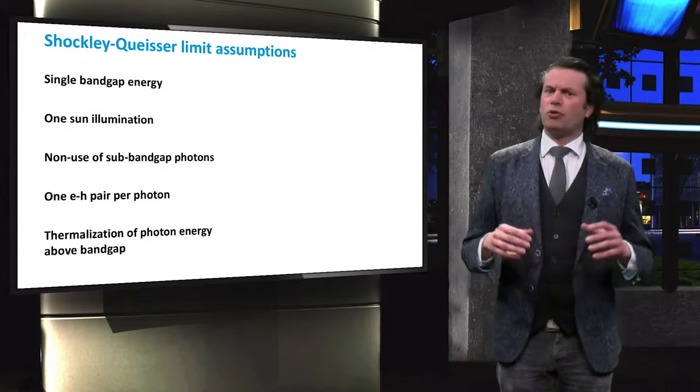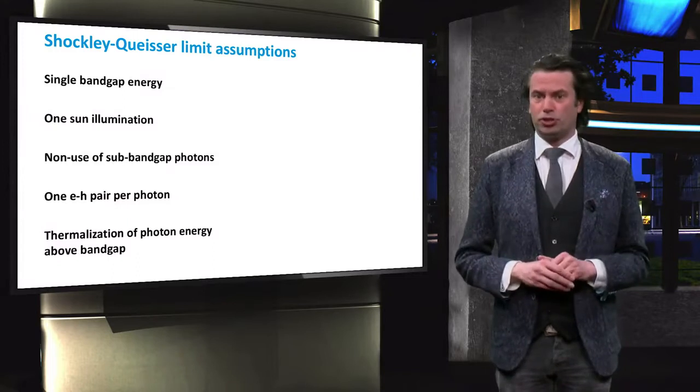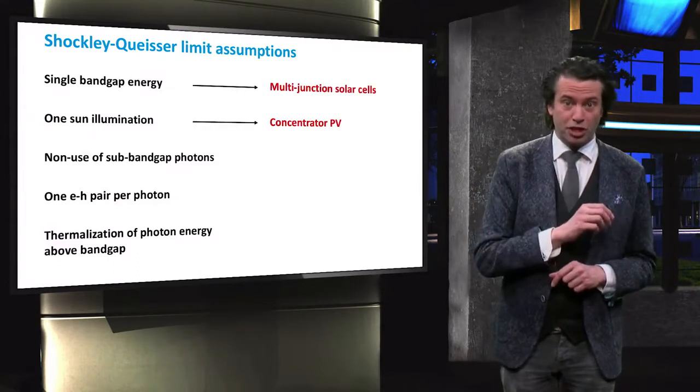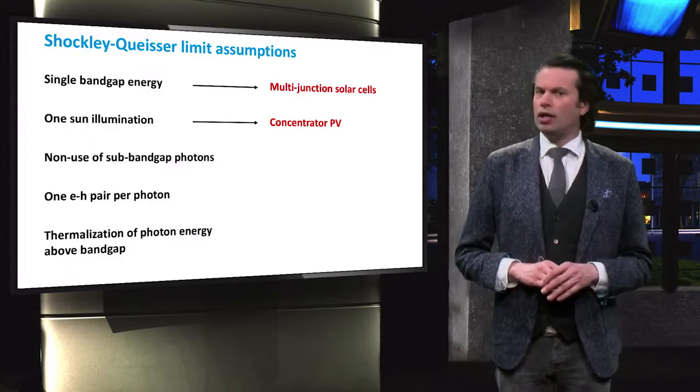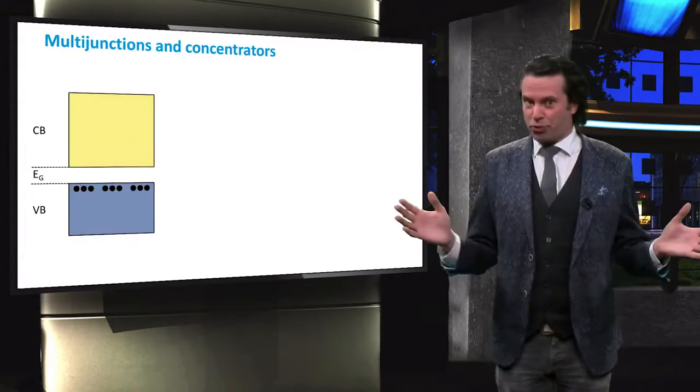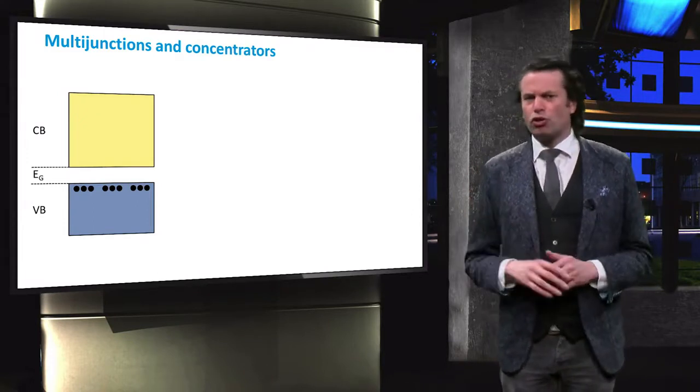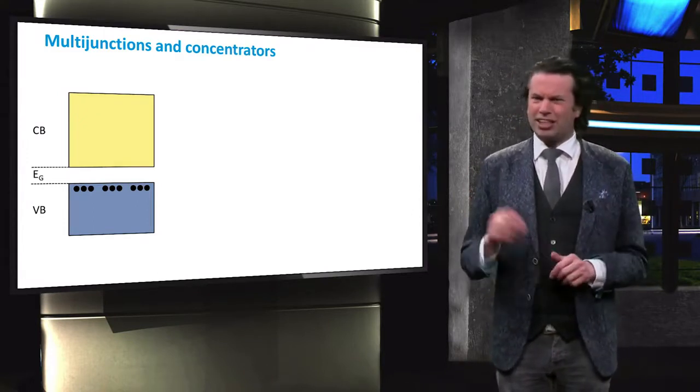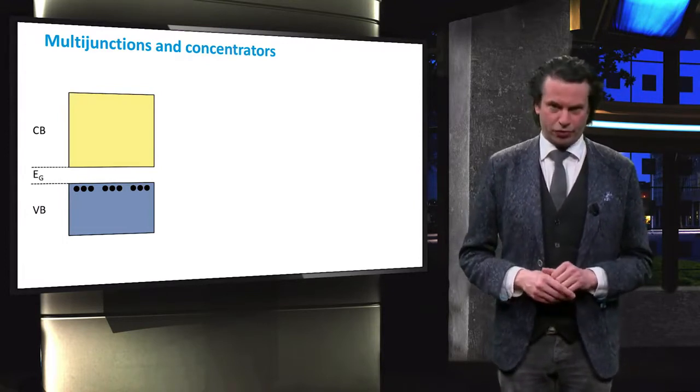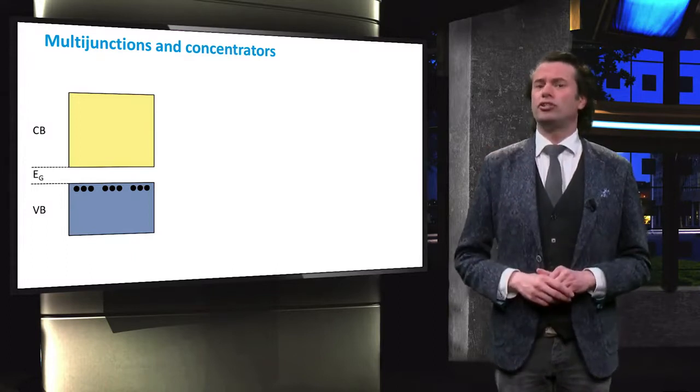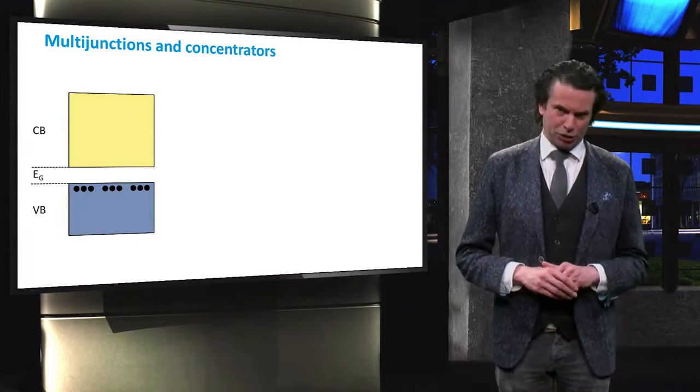During this course we already discussed two concepts that challenge these assumptions, namely multijunction solar cells and concentrator PV. Depending on which expert in photovoltaics you would talk to, multijunction solar cells and concentrator systems are seen as part of the second or third generation photovoltaics. In these solar cells, multiple absorbers are combined with different bandgap energies.